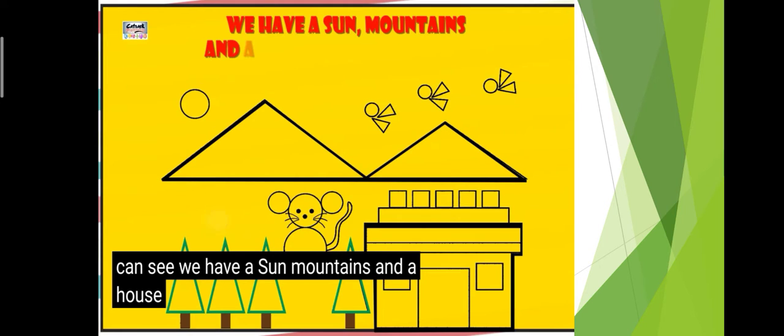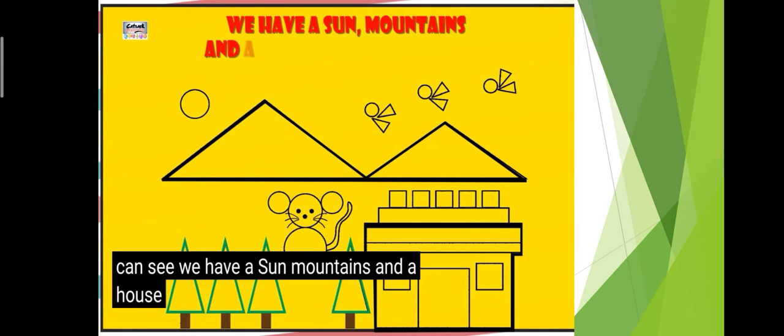For example, we can see we have a sun, mountains, trees, and a house. We have seen in this picture we have mountains, birds, and trees.